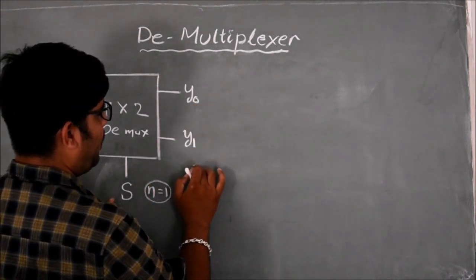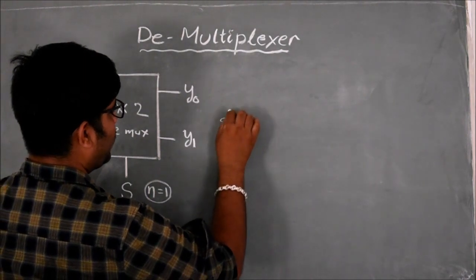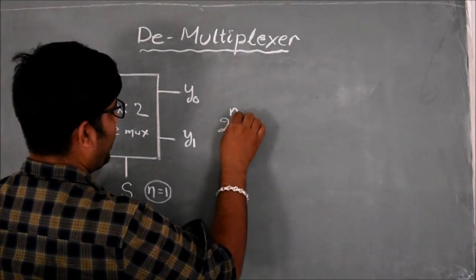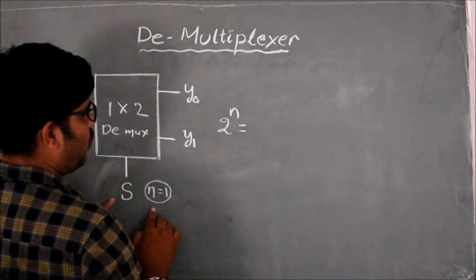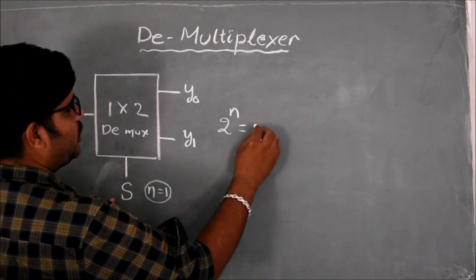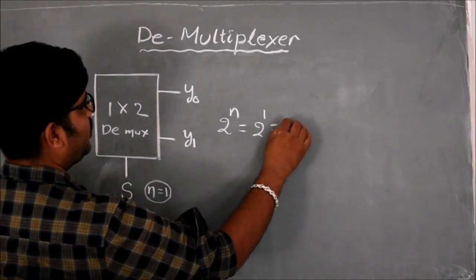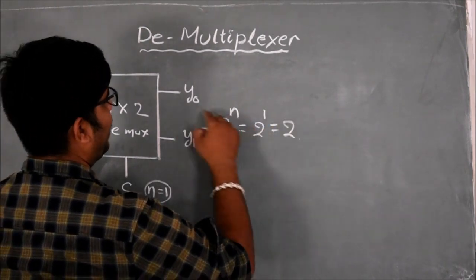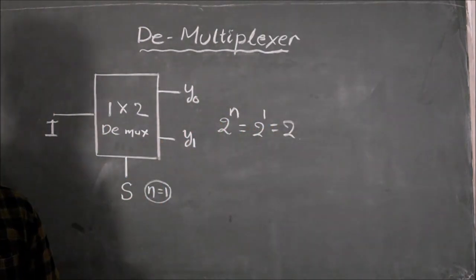The number of output lines is equal to 2 to the power N. Here N is equal to 1, so 2 to the power 1 is equal to 2 numbers of output lines: Y0 and Y1.